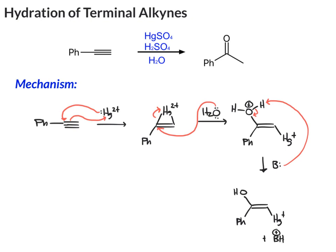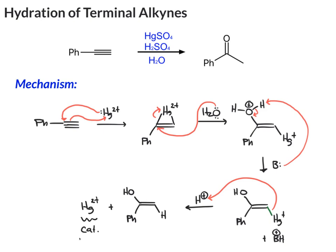We end up with this intermediate. Next, we're finally ready to get rid of the mercury. There is sulfuric acid around, so in the presence of acid, these two electrons in this carbon-mercury bond will leave the mercury and come over and take the proton. We end up now with a proton in that position. And then because the mercury lost those two electrons, we've regenerated mercury 2 — that's where the catalyst gets regenerated. And then finally, the enol will tautomerize to give us the ketone.